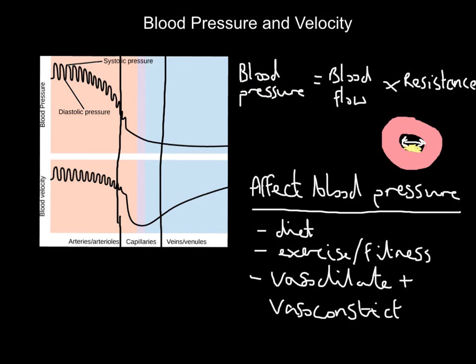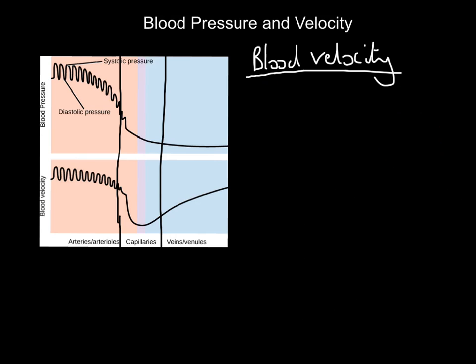So let's quickly move on and finish off with blood velocity. Quick terminology check - when we're talking about velocity we're talking about speed, how quickly the blood is flowing through your blood vessels. If we come back down to the diagram here, now we're looking at this bottom half - blood velocity. It's slightly different to the blood pressure one. Blood velocity is highest in the arteries, the same as blood pressure. So they have the highest pressure and they have the highest velocities.